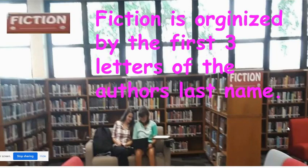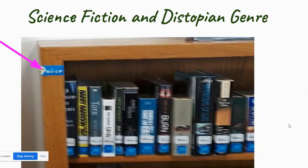We have a huge fictional area. It starts way down on the bottom west end of the library and continues on for many shelves. Fiction is organized with the word FIC and then the author's last name from A to Z. We also have some special collections — we have science fiction, and they are right in the middle of the library, right at the bottom of the stairs.